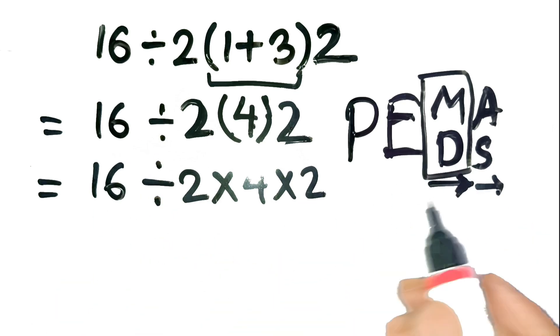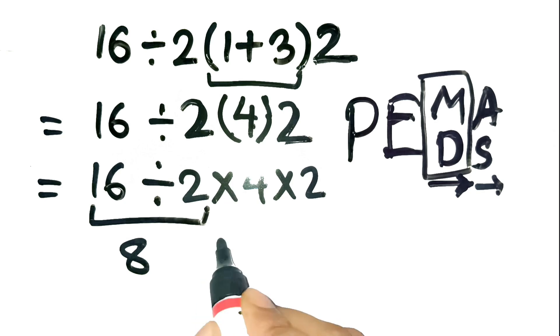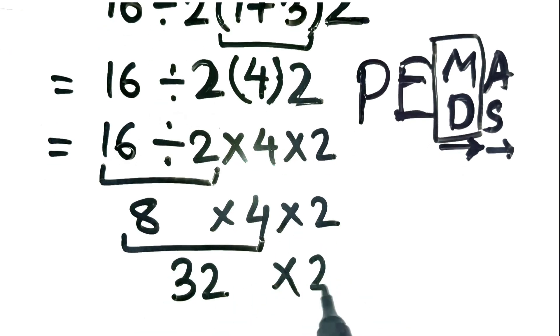Now following PEMDIS, left to right, we first do 16 divided by 2, which is 8. Then we have 8 times 4 times 2. 8 times 4 is 32, and 32 times 2 is 64.